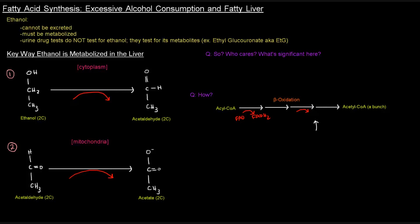Ethanol, ethyl alcohol. Humans drink it — they've been drinking it for ages — and we know it causes health problems. I want to bring up the one that relates to fatty acid synthesis: excessive alcohol consumption leading to fatty liver. The first thing we need to know about ethanol is that it cannot be excreted in our urine; it needs to be metabolized. In fact, urine drug tests do not actually test for ethanol — they test for the metabolites of it, and one of those is ethyl glucuronide, also known as ETG. But the point is that ethanol must be metabolized.